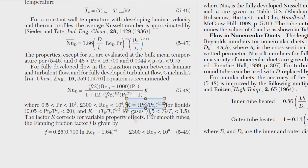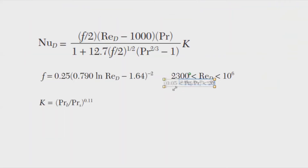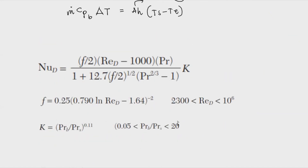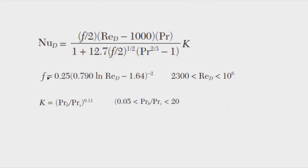The condition states that for liquids, the Prandtl number ratio should be within the specified bounds; deviation may occur if these conditions aren't satisfied. Since we have the Reynolds number, let's proceed. I used to solve such equations in Momentum Transfer using graphs, but equations are more accurate and give exact values. I recommend using correlations instead of graphs whenever they're available.